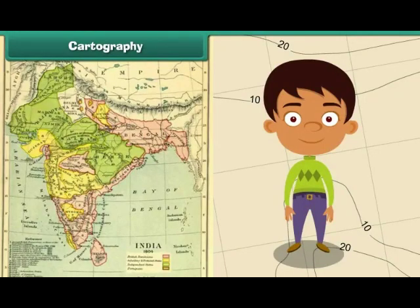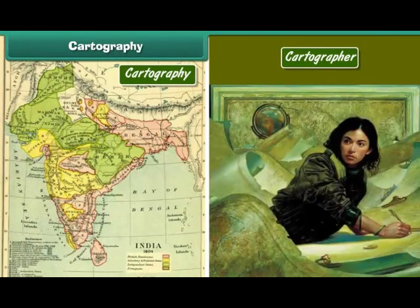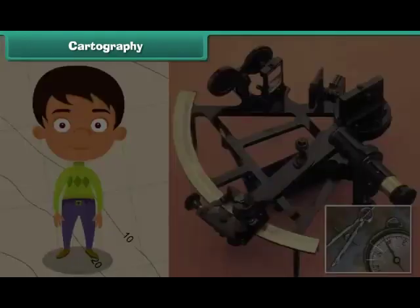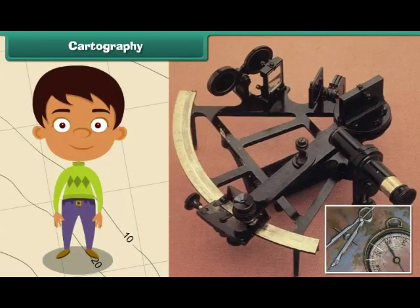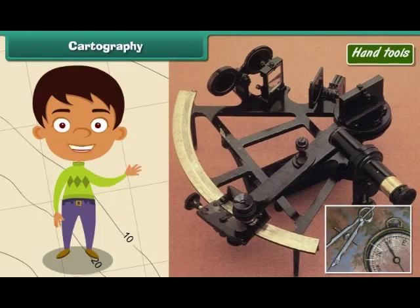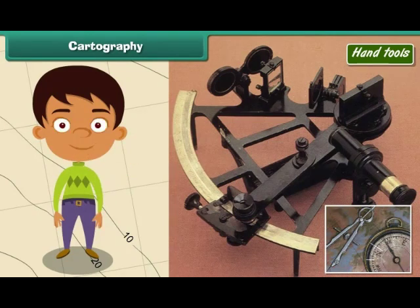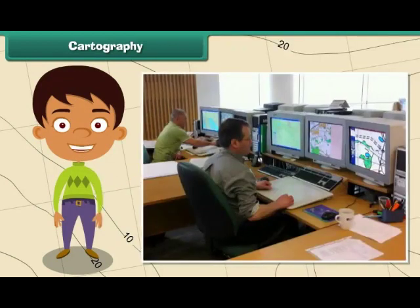Cartography is the science of drawing maps. The person who draws maps is known as a cartographer. In the olden days, maps were drawn using hand tools. Hand cartography was a time-consuming and difficult process, and maps drawn using hand tools were also inaccurate. But nowadays, maps are drawn with the help of computer software, hence they are more accurate.